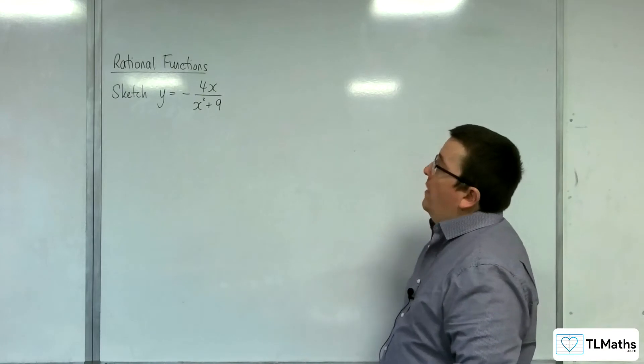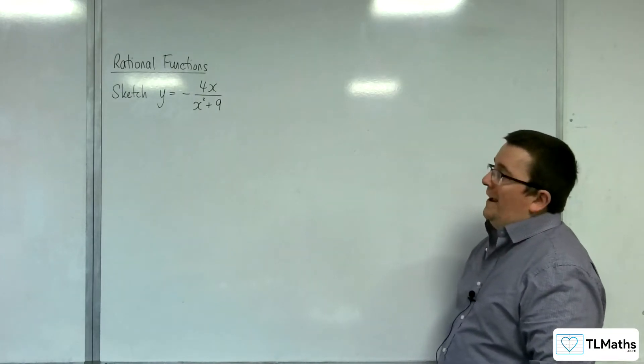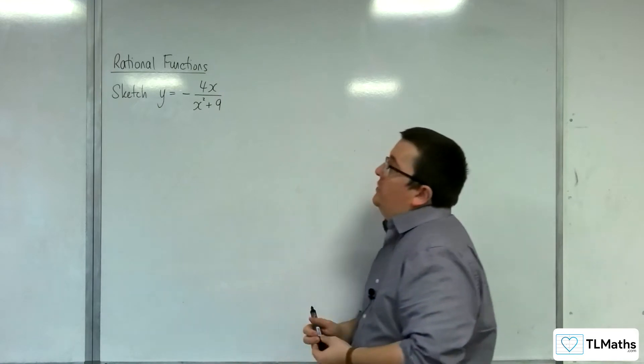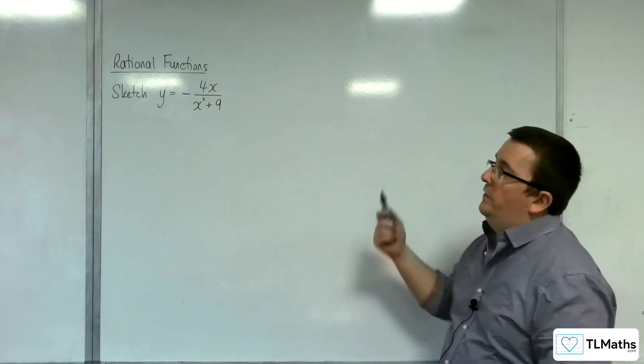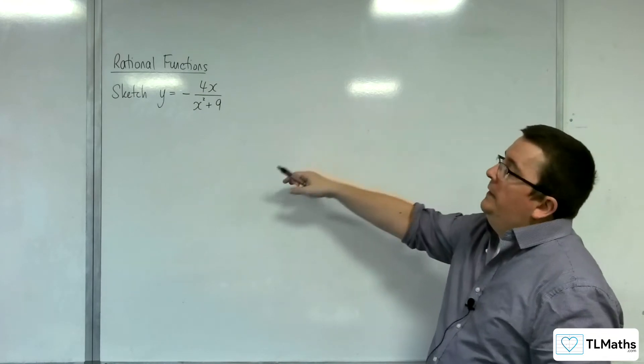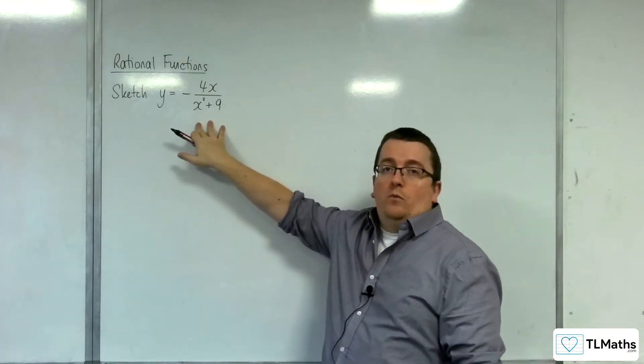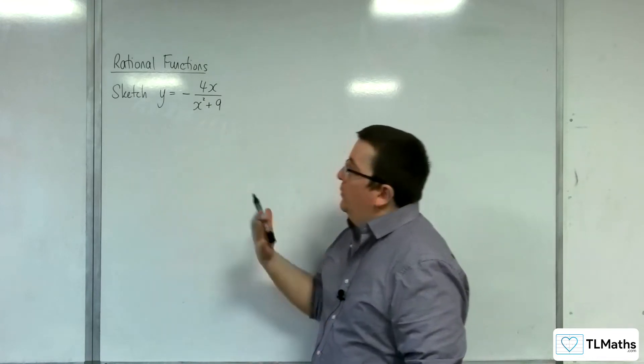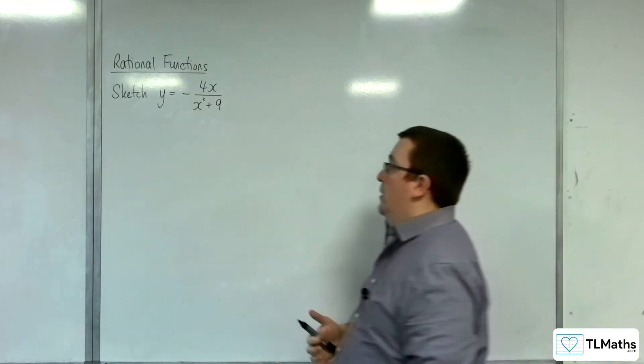In this video, I'm going to sketch y equals minus 4x over x squared plus 9. So the first thing to do is to see if you can factorize either the numerator or denominator. Obviously, we don't need to bother with the numerator. And the x squared plus 9, well, that doesn't factorize, unfortunately. So we can't really do anything with that at the moment.